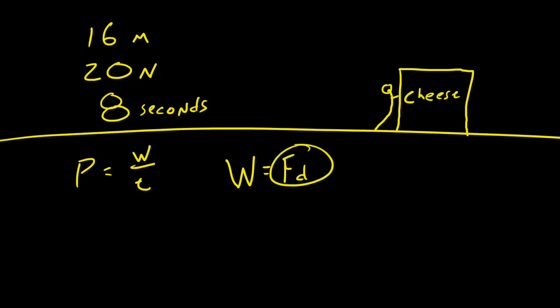So let's just go ahead and substitute this W right here for what work is equal to, in other words, force times displacement. So in other words, power not only equals work over time, but power is also equal to force times displacement over time. It's pretty much the same exact things except we substitute force times displacement for work. So let's go ahead and figure out that work right now.